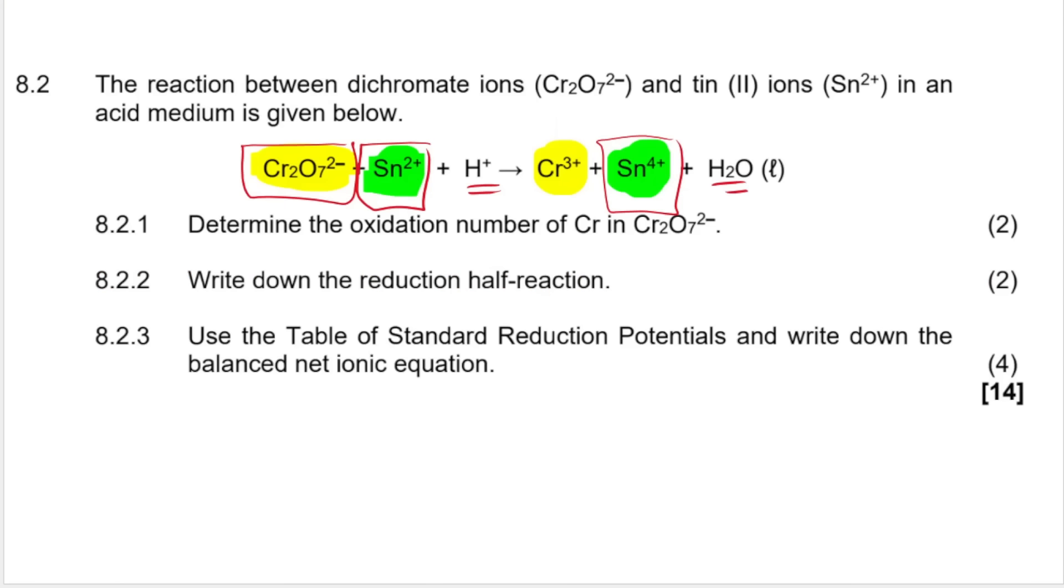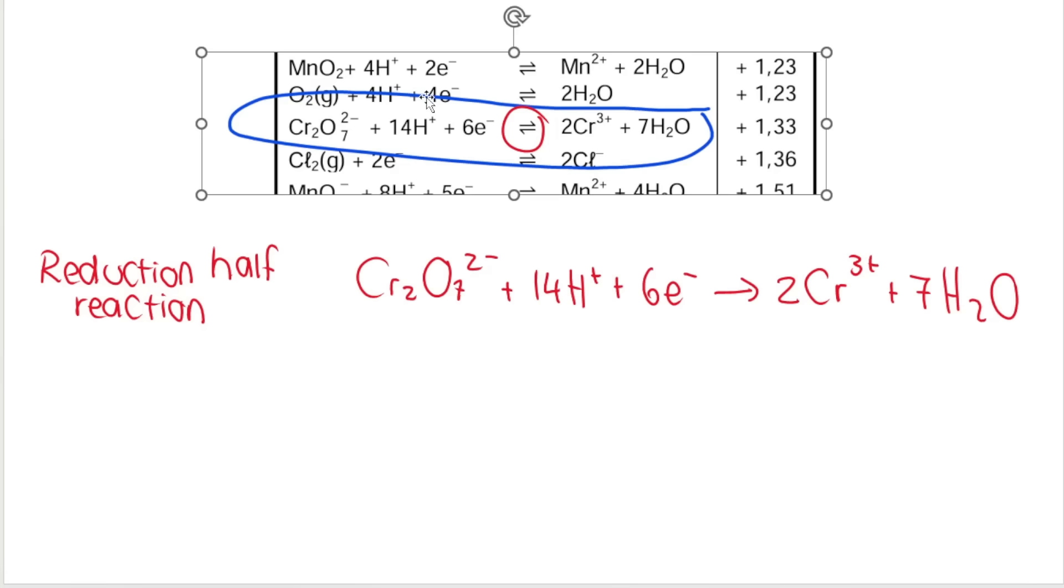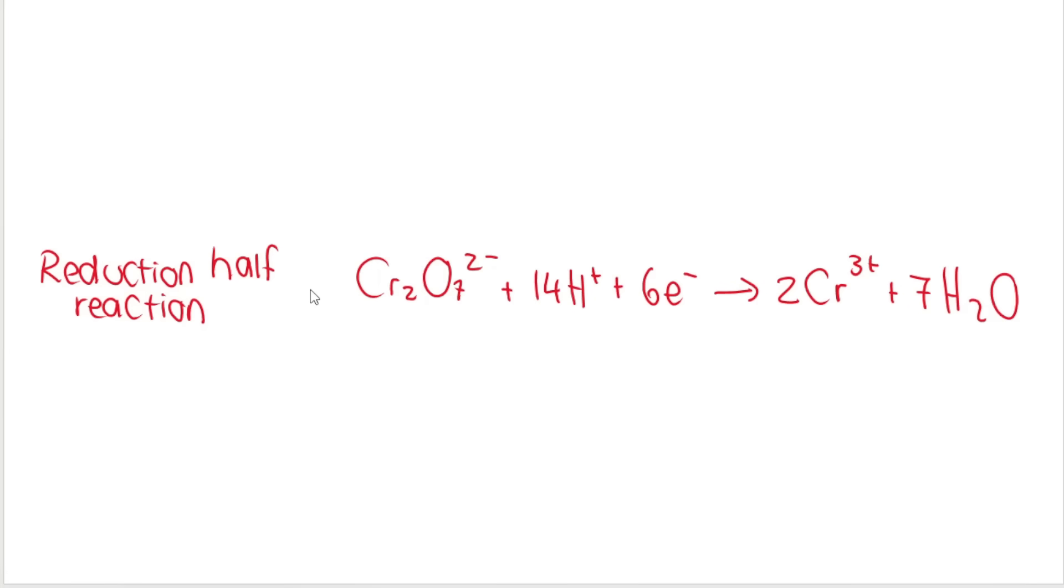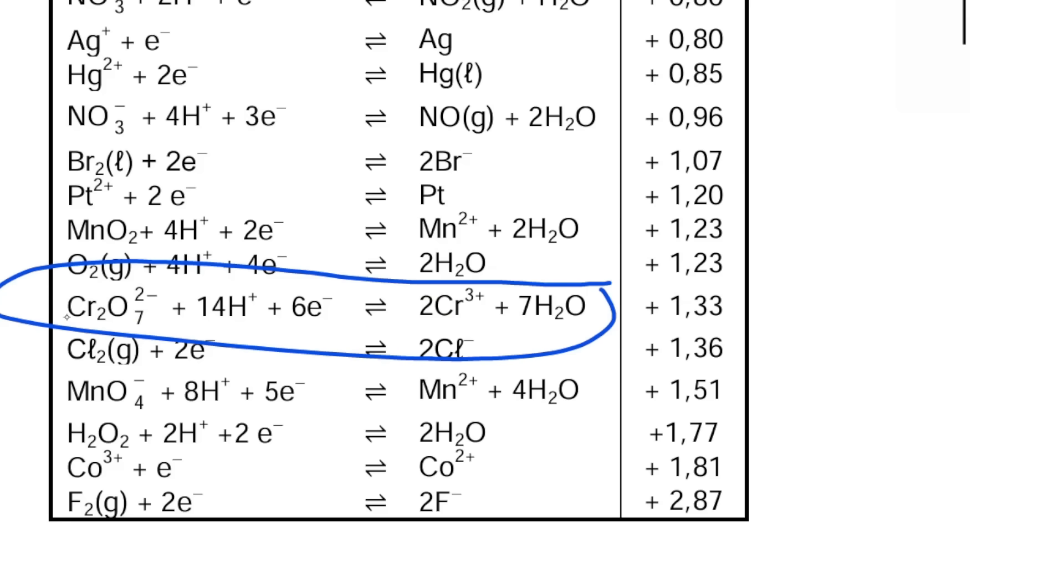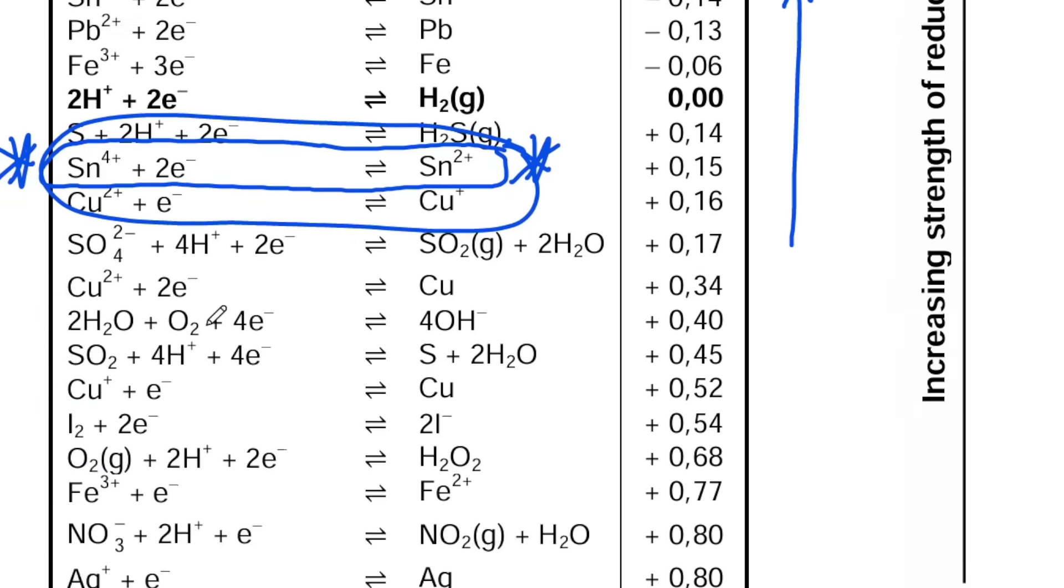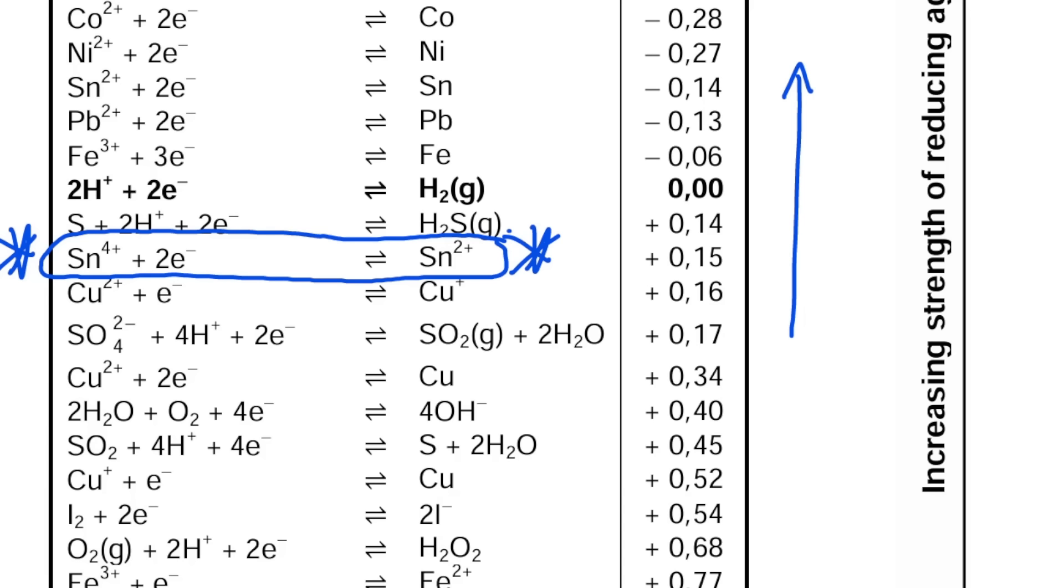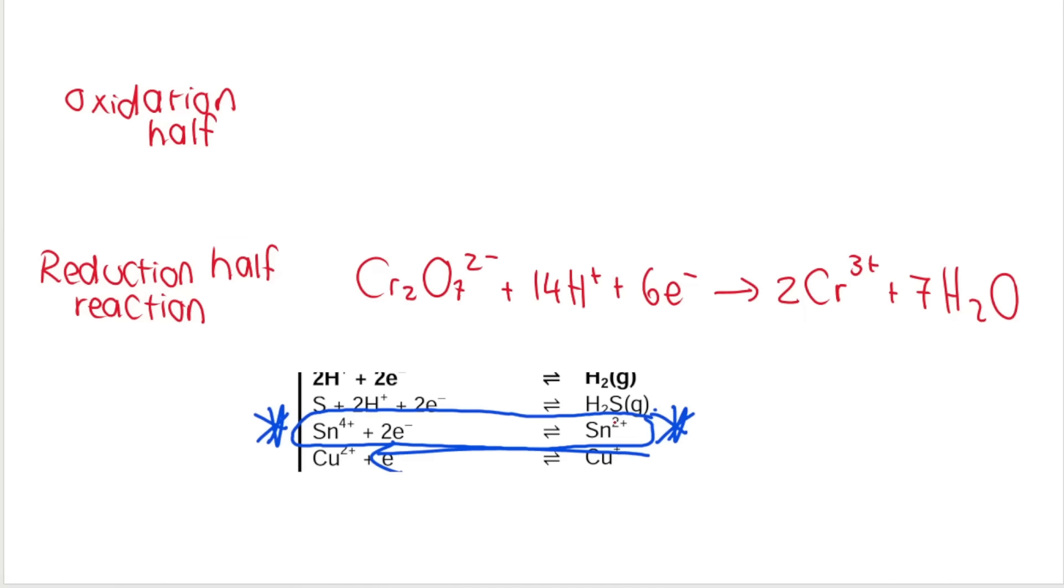My next question wants the balanced net ionic equation using the table. So like I said, when using the table, we need to identify the half reactions. So I've already identified the reduction half reaction and I've written it out. Go back to the table. So the one lower down, that was my reduction half reaction. This one, which I already wrote down. Then we scroll up the first reaction that we come across. So the one that I've circled over here is my oxidation half reaction. And I write it down backwards. So in other words, we write down the Sn²⁺ first, Sn²⁺. Then we draw an arrow. And then we write down Sn⁴⁺ plus 2e⁻.